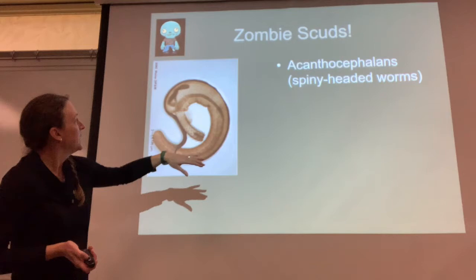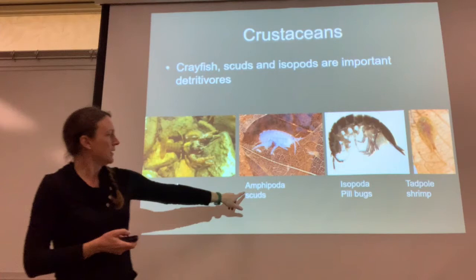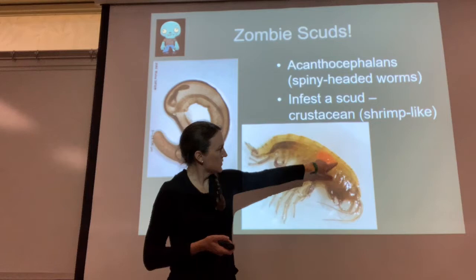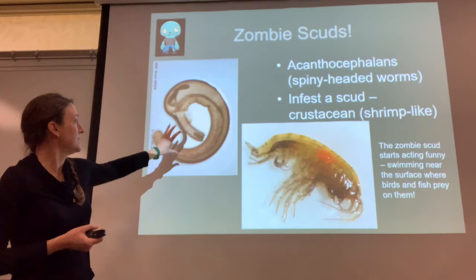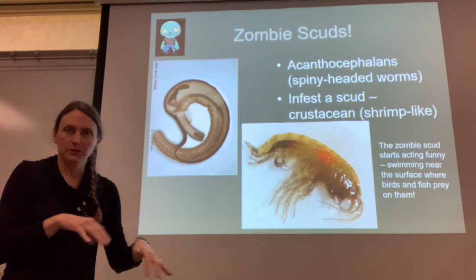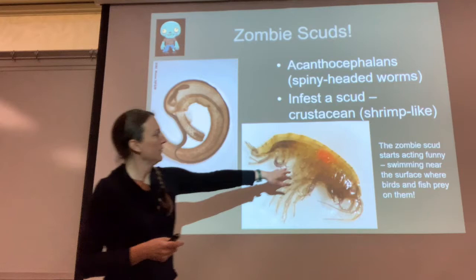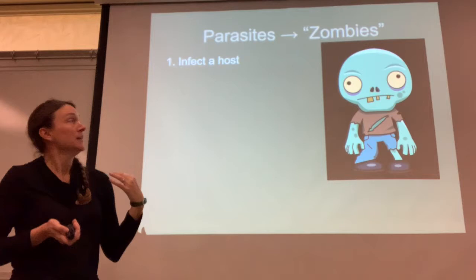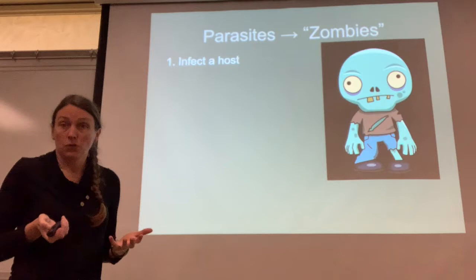There are also zombie scuds. Scuds are little amphipods — little crustaceans — but they can be infected by the spiny-headed worm. Here you can see a scud with the spiny-headed worm has this red spot. Once infected, they stop rooting around in the detritus at the bottom of a stream and start swimming up near the surface, bouncing around and showing off this red spot where birds and fish will prey on them. So this worm is trying to get into a bird or fish host — another zombie.